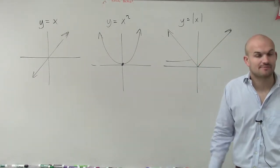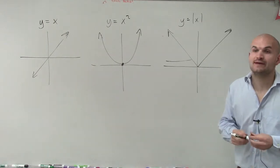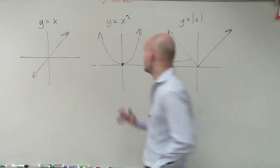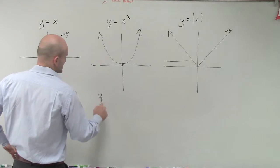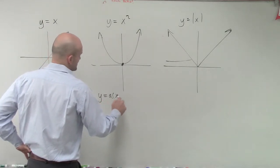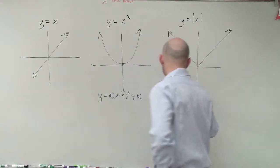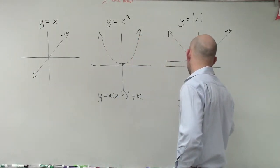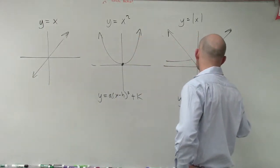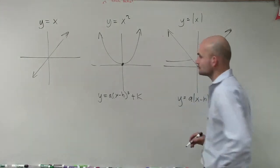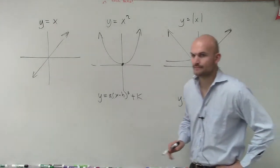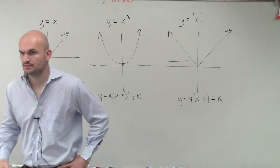And then for each one of these functions, ladies and gentlemen, we also talked about how we can have transformations. I just want to quickly review this. This one, we talked about vertex form, which is y equals a times x minus h squared plus k. And here, we talked about y equals a absolute value of x minus h plus k, right? Does everybody remember this?